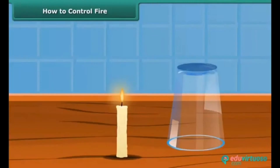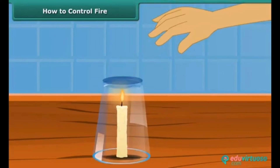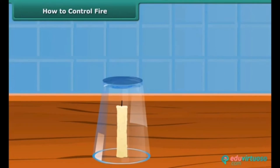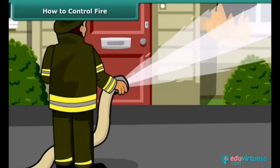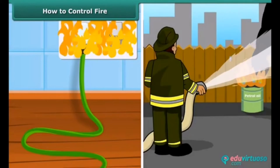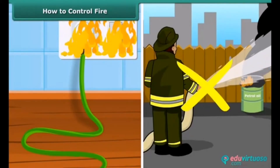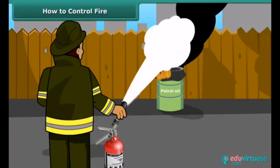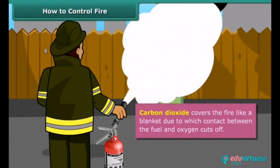Now we will see how fire can be put out. Fire needs oxygen, heat, and fuel to exist; however, it can be extinguished by removing any one of them. Firemen throw water on fire to extinguish it — water brings the temperature of the combustible material below its ignition temperature and cuts off the supply of air. But water is not a good extinguisher for electrical or oil fires. For those, it is best to use carbon dioxide, which, being heavier than oxygen, covers the fire like a blanket and cuts off contact between the fuel and oxygen.